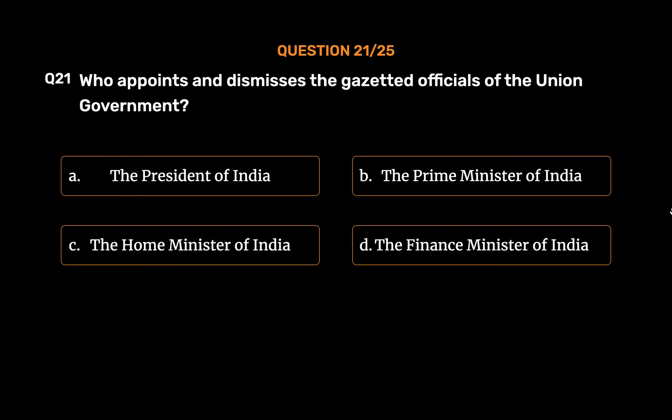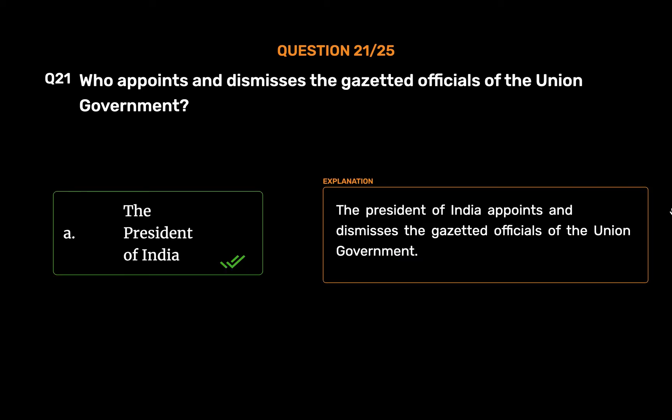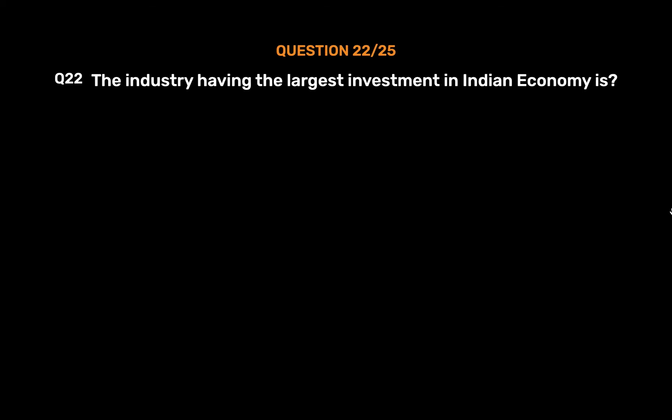The correct answer is Option A: The President of India. The President of India appoints and dismisses the gazetted officials of the union government.